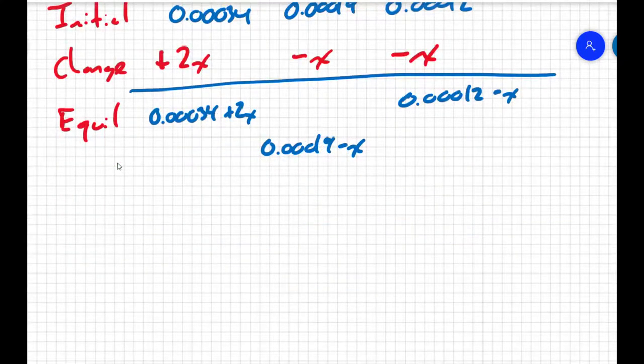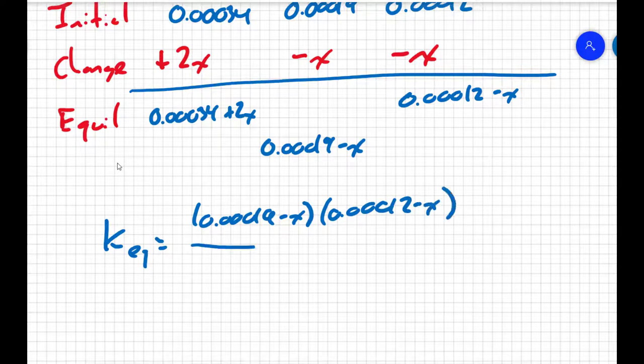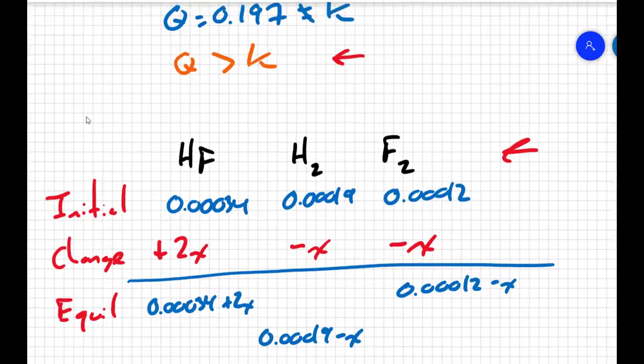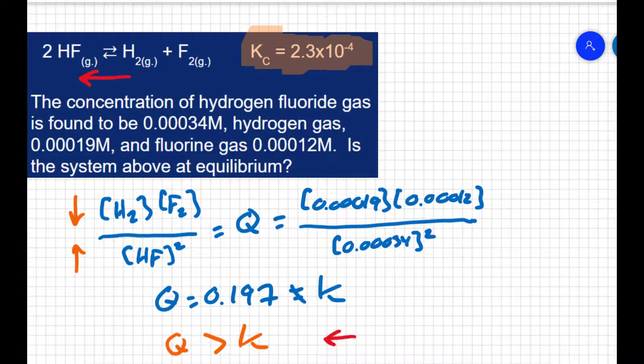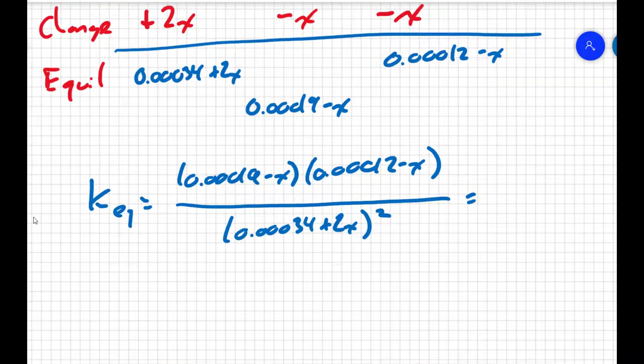So at equilibrium, my KEQ will equal the concentration of my products, 0.00019 minus X times 0.00012 minus X, all over my reactant 0.00034 plus 2X squared, and at equilibrium, we know the constant. We know this equals 2.3 times 10 to the negative 4. So I can set this whole thing to 2.3 times 10 to the negative 4.